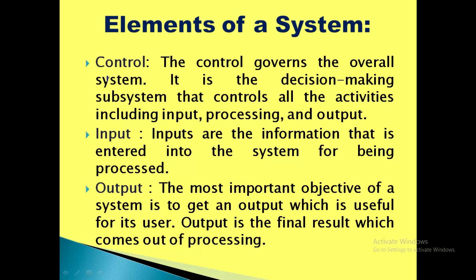Control governs the overall system — it is the decision-making subsystem that controls all activities including input, processing, and output. Input is the information that is entered into the system for being processed — whatever information is entered into the system for processing is called input. Output: the most important objective of the system is to get an output useful for its user. Output is the final result that comes out of processing. The processor transforms input into output and gives the final result.